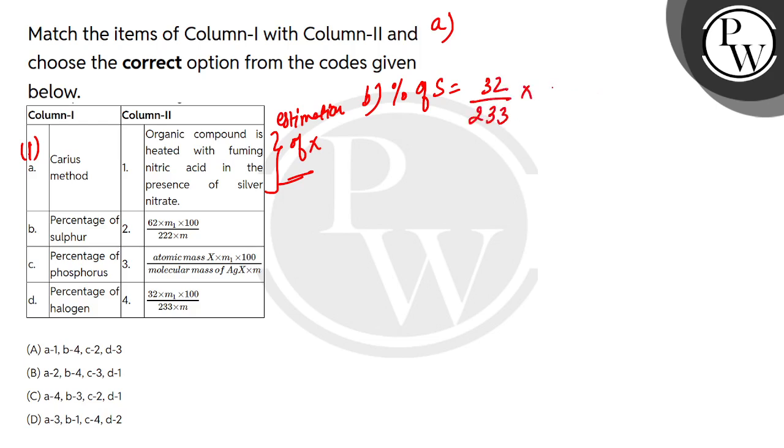M1 is the mass of the barium sulfate divided by mass of the organic compound M, multiplied by 100%. So the percentage of sulfur is the percentage formula. So B will match with 4.